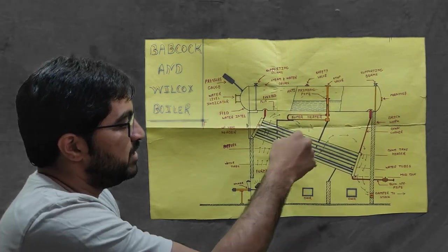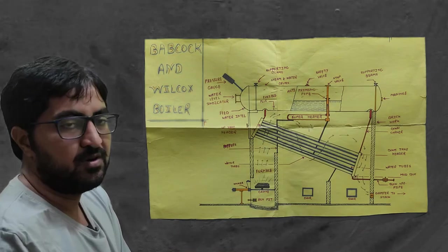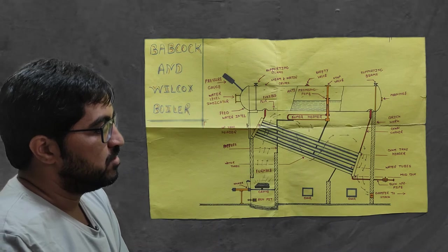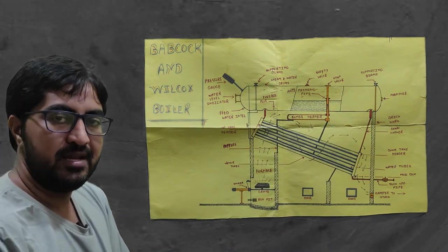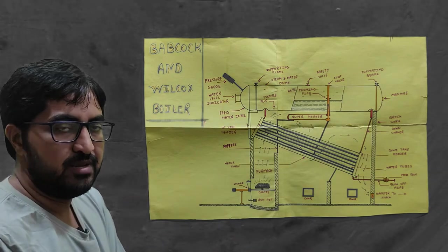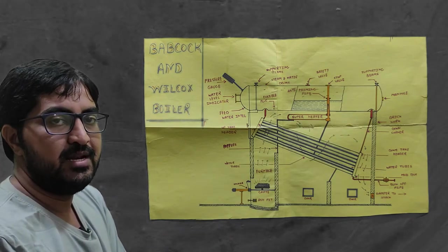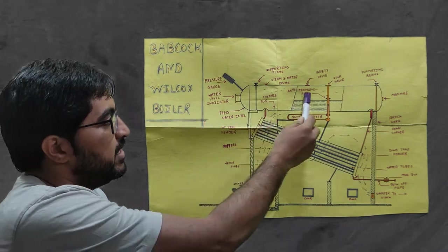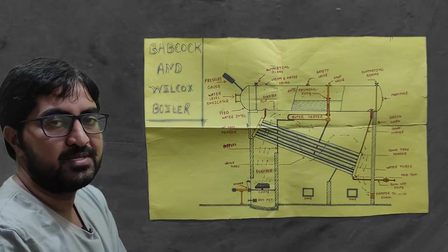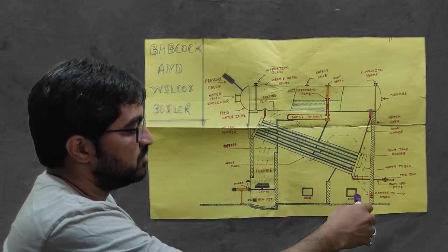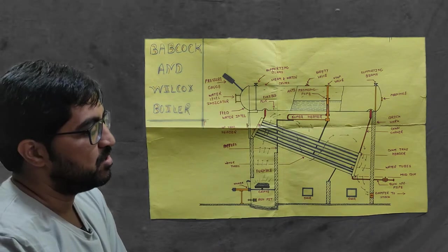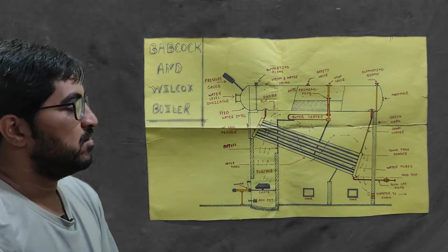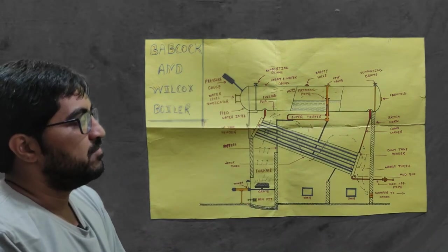The hot gases pass through the bundle of tubes — inside the tubes is water, since this is a water tube boiler. The temperature of the water increases and it converts into steam. Since the density of steam is less than water, steam collects on the top side of the shell and water remains at the bottom. The flue gases then pass through the damper into the smoke box chamber, which is connected with the long chimney and exposed to atmosphere. This is the working principle of the Babcock and Wilcox boiler.